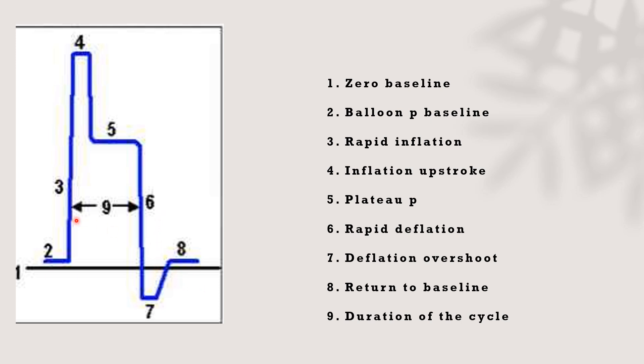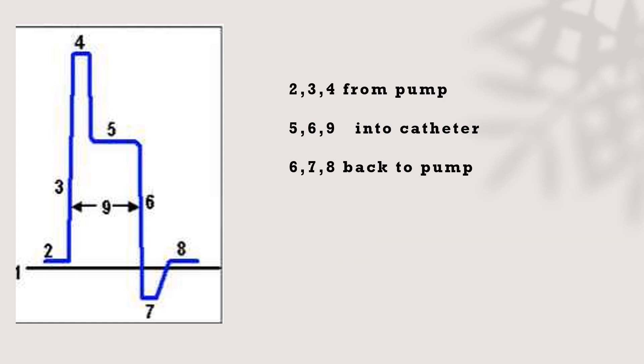For nine, it's the duration of the cycle, the duration at which the balloon becomes inflated. And also, the inflation shouldn't exceed 250 millimeters mercury. This is to divide the stages of the balloon inflation and deflation. For inflation, two, three, and four are stages two, three, four, they are pushing of the helium from the pump.